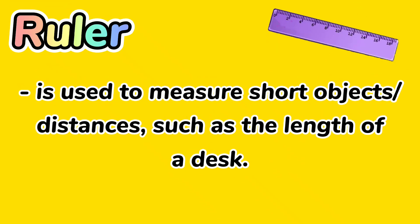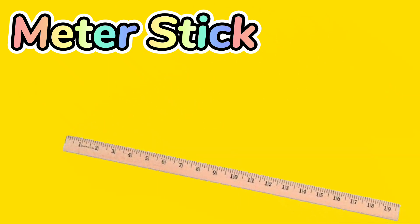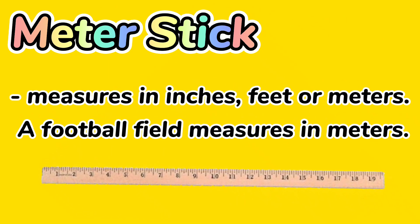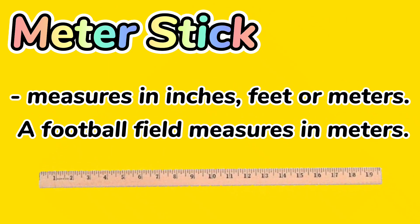A ruler is used to measure short objects or distances, such as the length of a desk. A meter stick measures in inches, feet, or meters. A football field measures in meters.